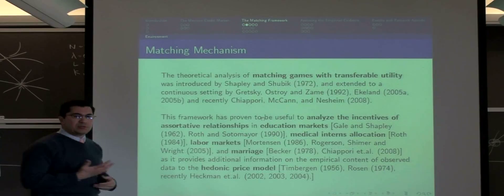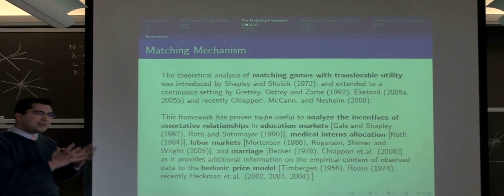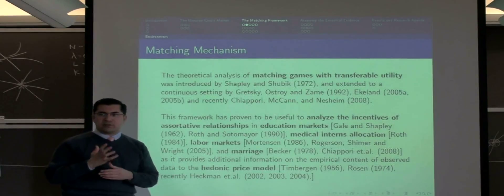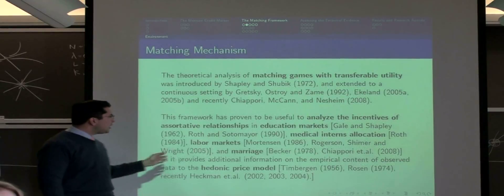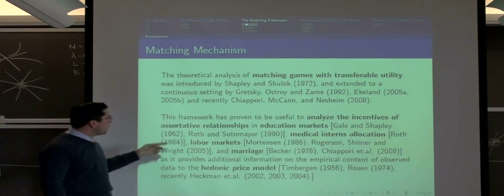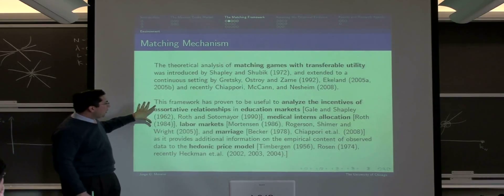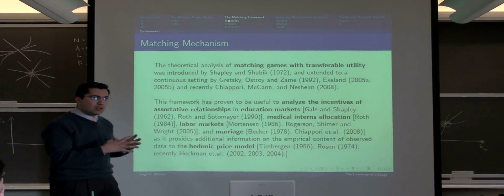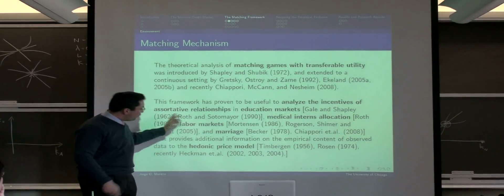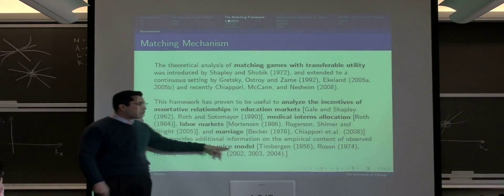What this research does is to analyze a basic matching game with transfer of utility. I'm going to introduce a framework that has been very useful for analyzing other assortative relationships. What the matching model does is to add theoretical content to a previous model, which has the Donick Price model.